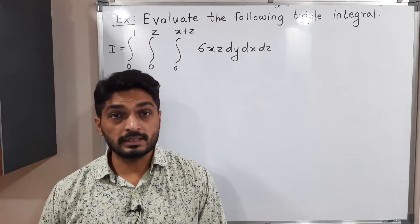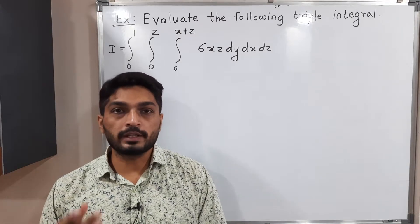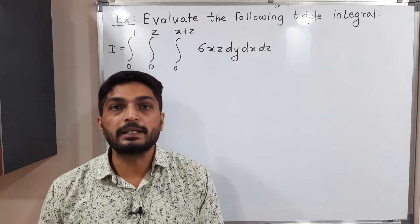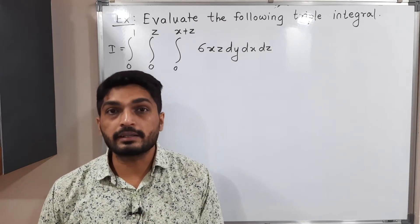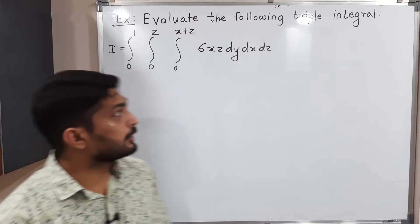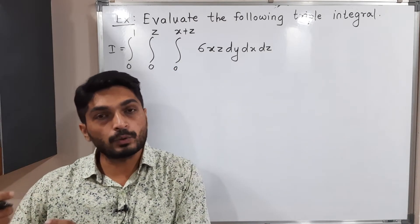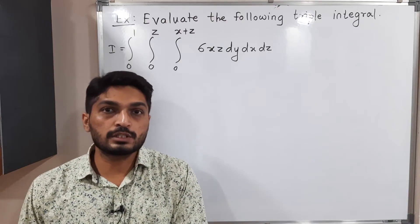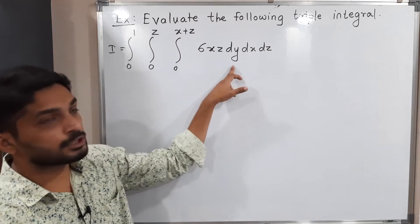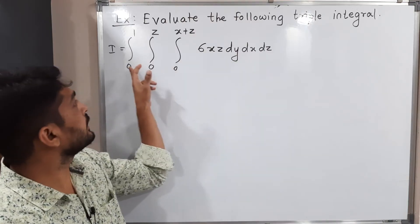Let us discuss this example — we have to find the value of this triple integral. In previous videos we have seen how to solve double integration, and we follow the same technique for triple integration. Both are iterated integrals, so we follow the same method: first we solve the inner integral, then the middle integral, then the outermost integral. In this example, the inner integration is with respect to y, the middle with respect to x, and the outer with respect to z.